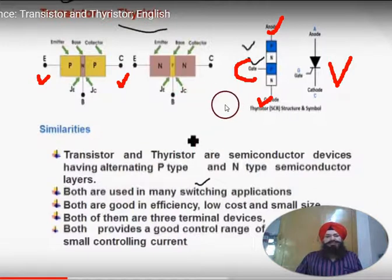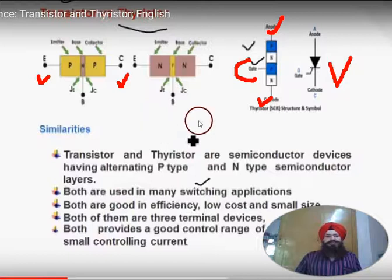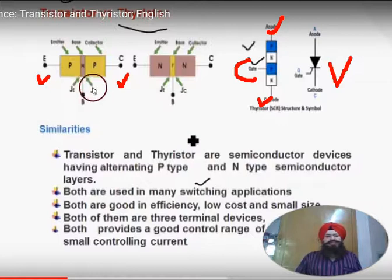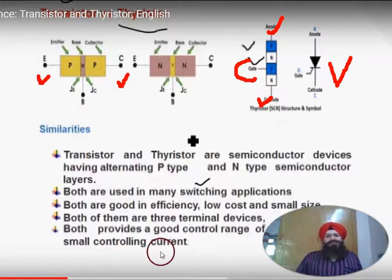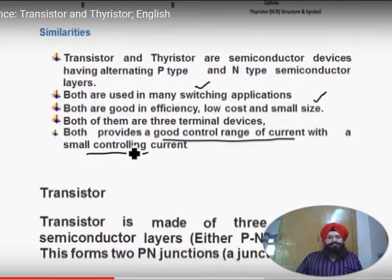Both are used in switching applications. Both are semiconductor devices with good efficiency. Both are three-terminal devices — emitter, base, collector for the transistor; and anode, gate, cathode for the thyristor. Both provide good control of a large current range with a small controlling current at the base or gate.